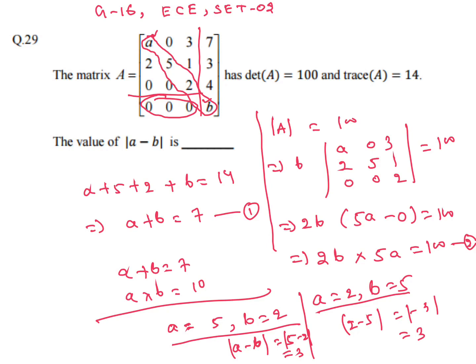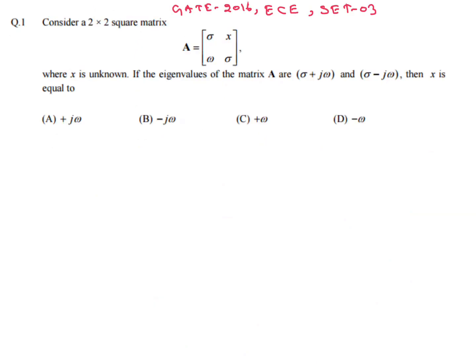This is GATE 2016 Electronics Set 3. Consider a 2×2 square matrix A with unknown x. If the eigenvalues of matrix A are σ + jω and σ − jω, then x equals what? We need to calculate x from the given eigenvalues.